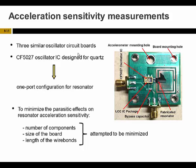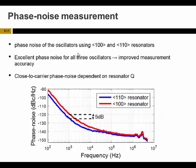To minimize the parasitic effects on resonator acceleration sensitivity, we decreased the number of components, the size of the board, and the length of the wire bonds. We now have three similar oscillator boards with the three resonators. This figure shows the phase noise performance for oscillators with the 1-1-0 and 1-0-0 resonators. Both have excellent phase noise performance, which enhances the accuracy of our measurements. The 1-1-0 resonator has slightly better phase noise performance at close-to-carrier offset frequencies due to its higher quality factor.